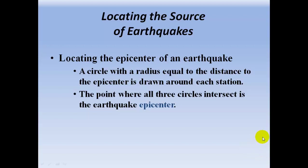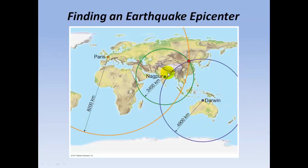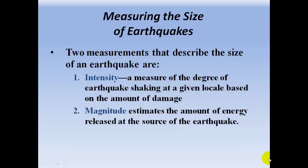We need to draw a circle with a radius equal to that distance around each station, and we do the same thing for two more stations. Where all three circles intersect, that's the epicenter. So we looked at data for the Nagpur station — we draw a circle 3,400 kilometers around that station. Darwin station is 4,900 kilometers, so we draw that circle. Paris is 8,200 kilometers away, and where all three circles intersect, that is the epicenter of the earthquake.